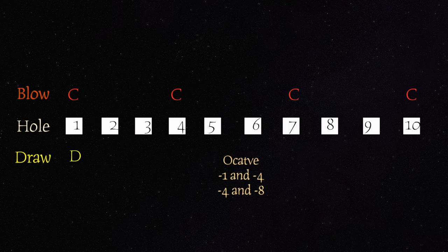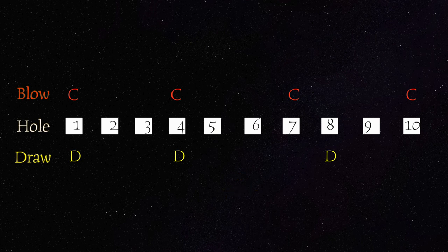The 1 and 4 draw is also an octave. And the 1 draw plays a D. So it means the 4 draw is a D note. 4 and 8 draw is also an octave. So it means the 8 draw is a D note. So now you have C and D located in the harmonica.